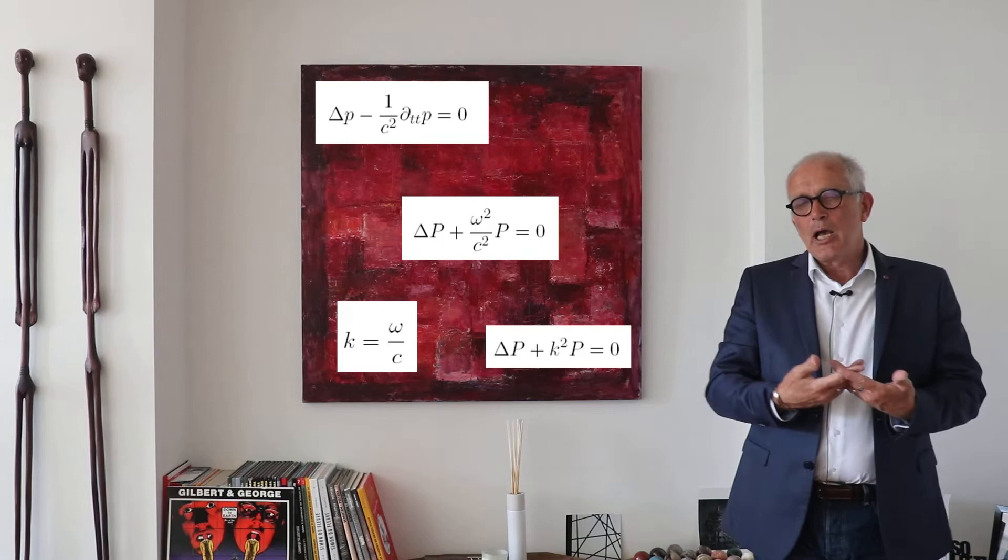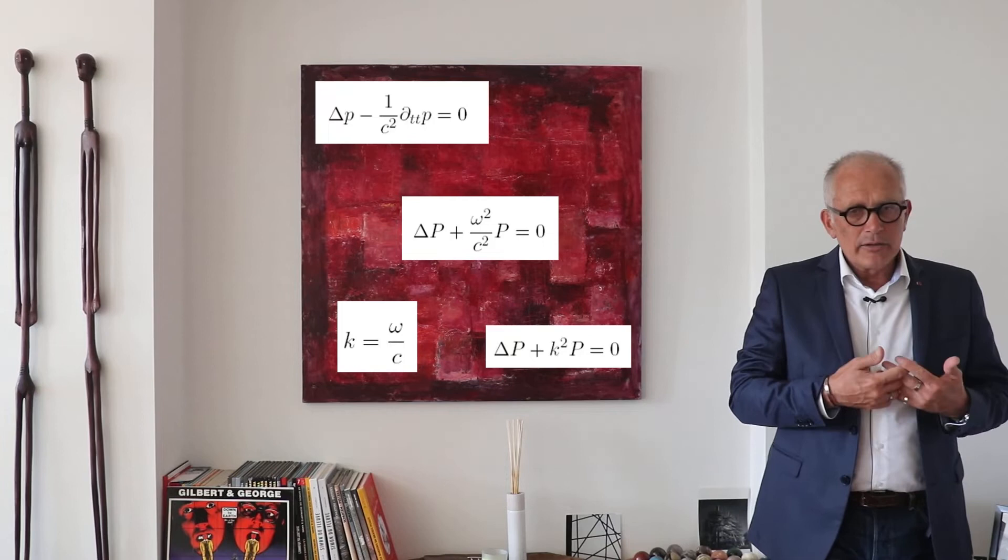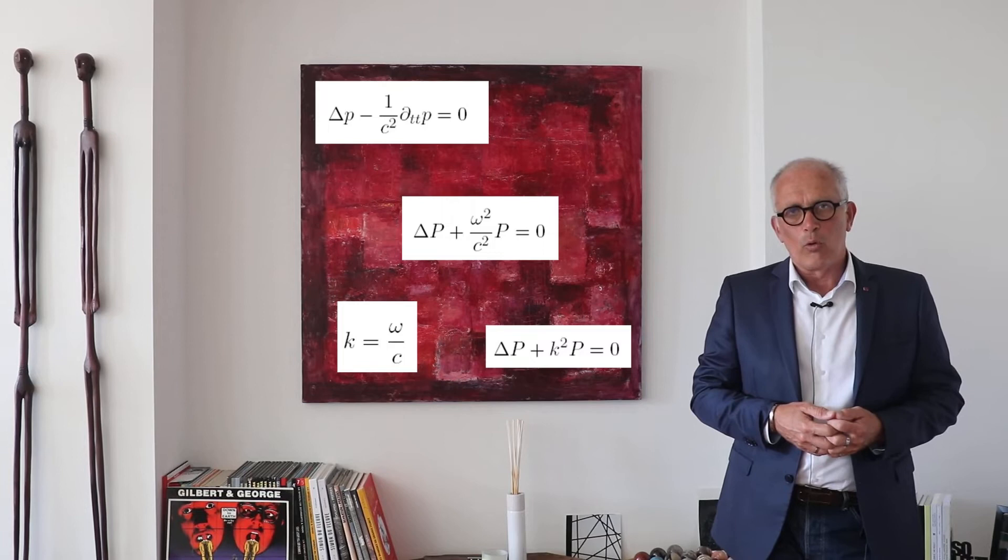So we usually write this equation: Laplacian of p plus k squared p equals 0. This is the Helmholtz equation and this is the equation we are going to solve.